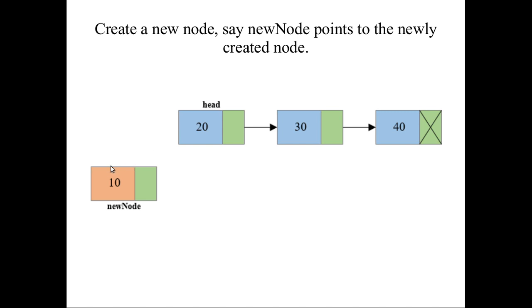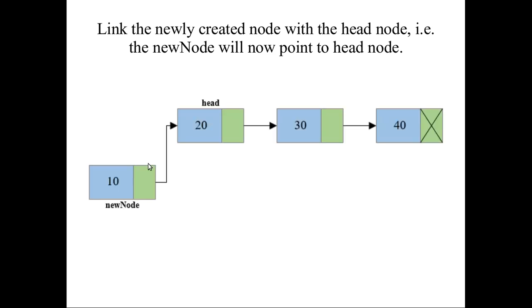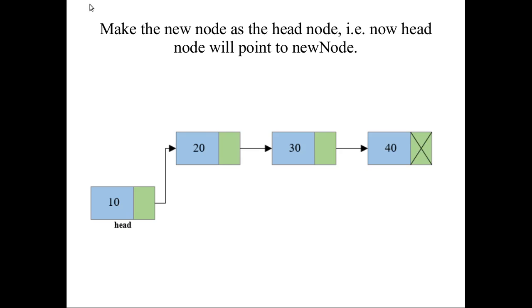To add the new node at the front: first, create the new node. Second, create a link from the new node pointing to the old head node. Third, declare the new node as the head node of the list. So there are only three steps: create the new node, link it to the old head, then declare it as the new head. This is how you insert a node at the beginning of the linked list.